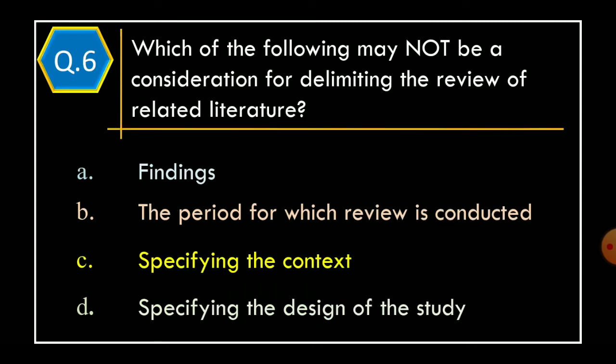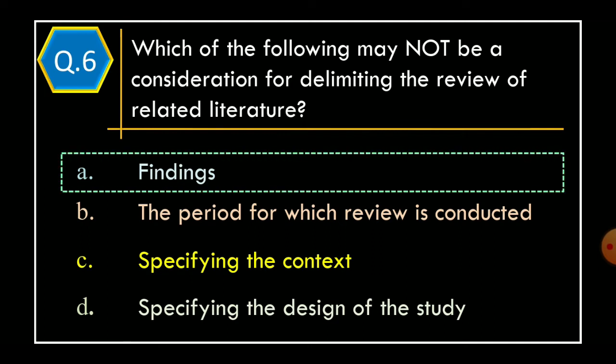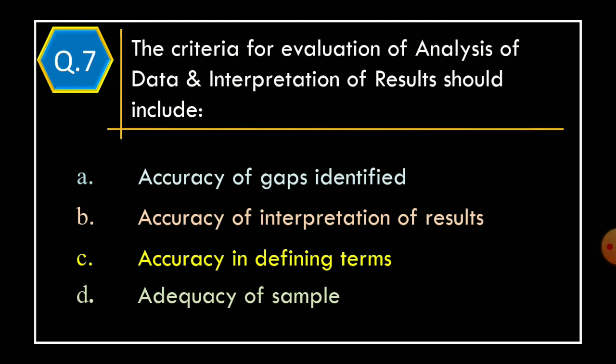Question 6: Which of the following may not be a consideration for delimiting the Review of Related Literature? Option A: Findings. Option B: The Period for which Review is Conducted. Option C: Specifying the Context. Option D: Specifying the Design of the Study. The correct option is Option A, Findings.